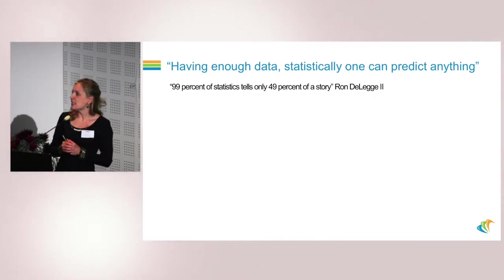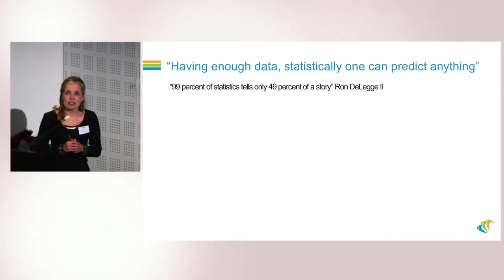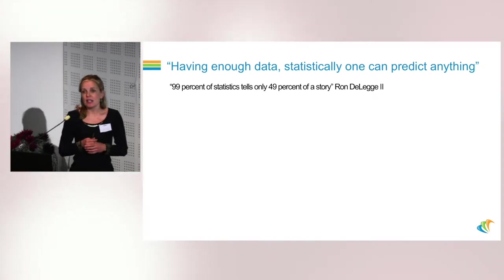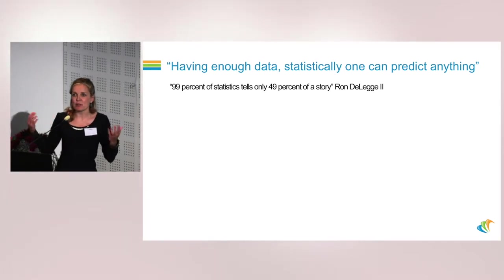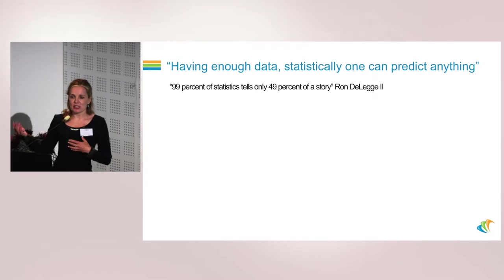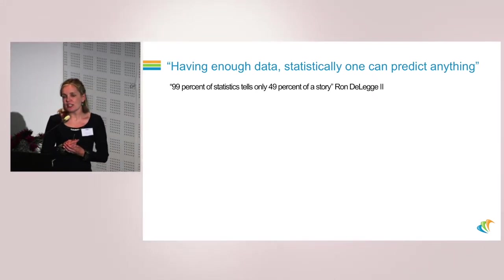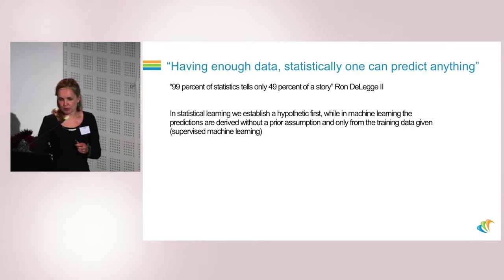There is a difference between statistical learning and machine learning, though of course there is overlap. In statistical learning, we usually establish an a priori model, a hypothesis of some sort, and then after the fact we try to prove the hypothesis is right. In machine learning, specifically in supervised learning, when we are training on a subset of data, we don't have an a priori assumption.